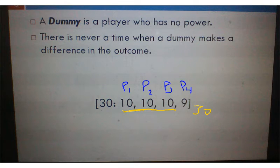But let's say we tried to use player 4, who has 9 votes, and we use player 1 and player 2. That's 10 plus 10 plus 9. That only adds up to 29. Or we try to use player 1, player 3, and player 4. That adds up to 29 as well.